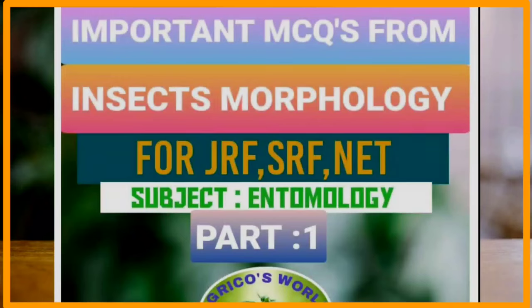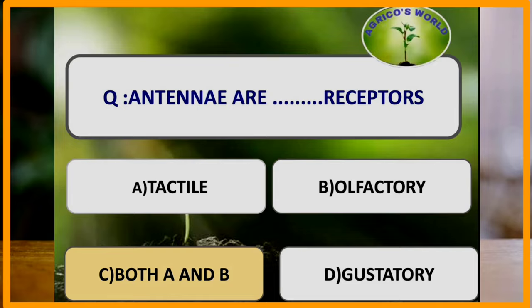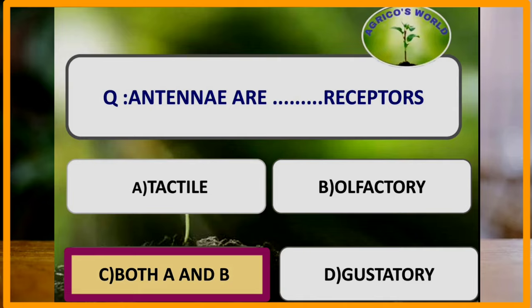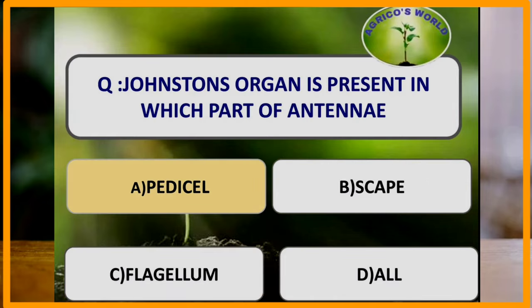Welcome to Agricose World. In this video we are going to discuss some important questions related to insect morphology. The first question: antennae are which type of receptors? Antennae are both tactile and olfactory receptors. Antennae are a pair of sensory pre-oral appendages arising from the second or antennal segment of the head, possessing nerves coming from the deutocerebrum of the brain.